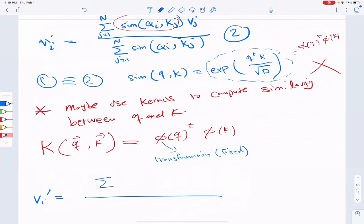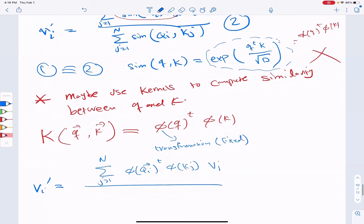Okay. So I have sum one to N. So similarity between QI and KJ is going to be phi of QI vector transposed phi of KJ is a number multiplied by VJ divided by the transformation of QI transposed KJ.